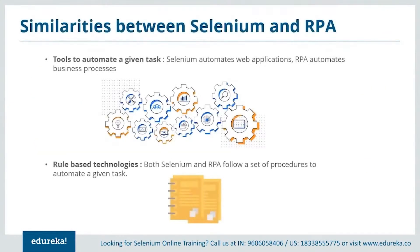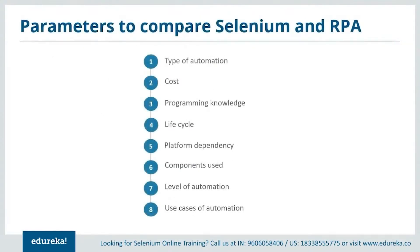Let's take a look at the similarities between Selenium and RPA. Both are automation tools used to automate a task — Selenium automates web applications and RPA automates business processes. Both tools are rule-based, meaning they follow a set of procedures to automate any given task. The parameters we'll use for comparison are: type of automation, cost, programming knowledge required, life cycle, platform dependency, components used to automate a task, level of automation, and use case of automation.